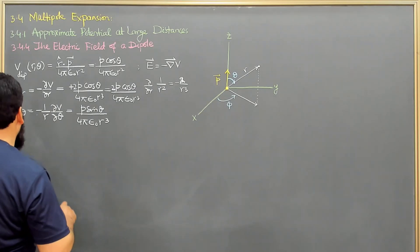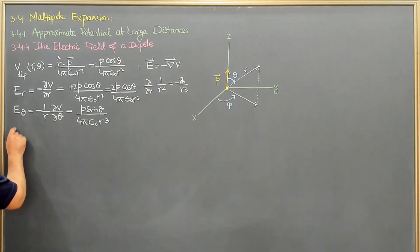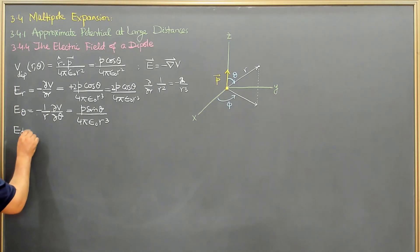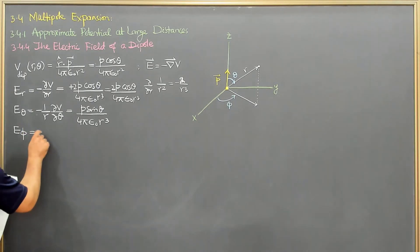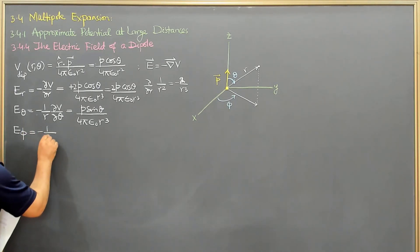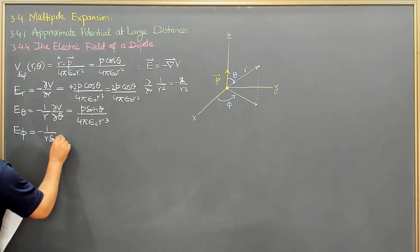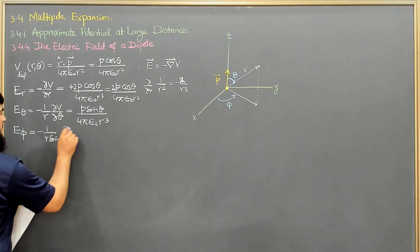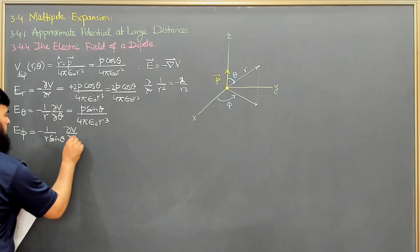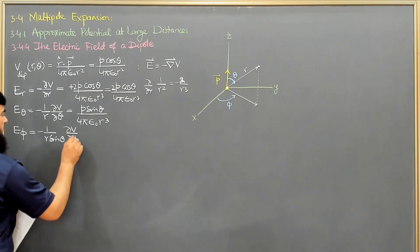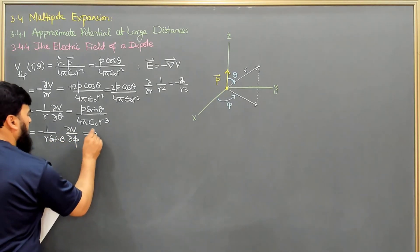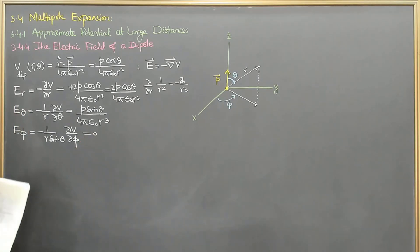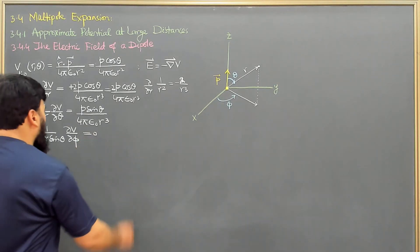The third component, E_phi, is minus (1 over R sin theta) times the partial derivative of V with respect to phi. Since V does not depend on phi, this partial derivative is zero, so E_phi = 0.